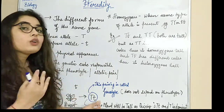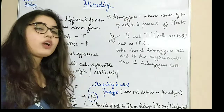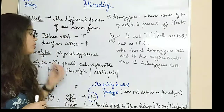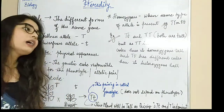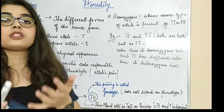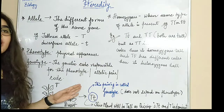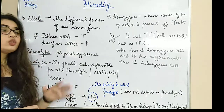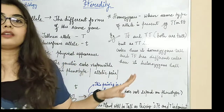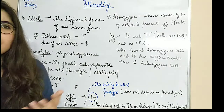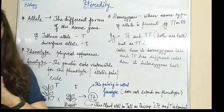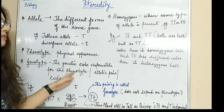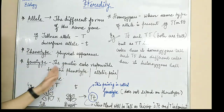But genotype is the genetic code — the internal code inside the plant or animal — which we cannot see. Phenotype we can physically see, but genotype you cannot see. Genotype refers to a code, or a genetic code, which is responsible for the phenotype — the allelic pair, or the code. Capital T, small t — capital T, capital T — small t, small t: these are small codes on the basis of which we can determine the phenotype of a plant or animal.